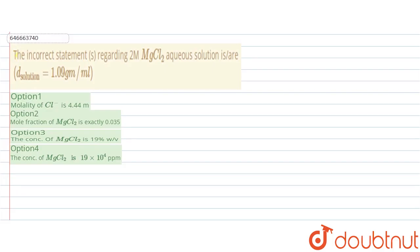Hello everyone. In this video we are going to see this question: find the incorrect statement or statements regarding a two molar MgCl₂ aqueous solution, where the density of the solution is given as 1.09 gram per mL.